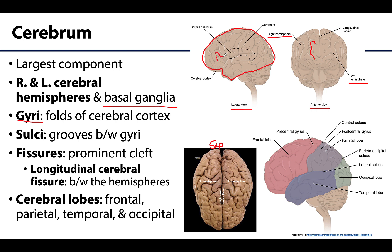Gyri are the ridges or folds of the cerebral cortex that really characterize the cerebral surface, and these are generally surrounded by sulci, which are the depressions or grooves between the gyri. The gyri and sulci function to increase the surface area of the brain, which is important because we're constrained by the surrounding bone in terms of brain size. This folding allows for a larger surface area.